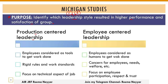The first style is Production-Centered Leadership — this is our task-oriented style. Here the leader's focus is only on work. Employees are considered as tools to get the work done, treated like machines. There are very rigid rules and work standards. The environment focuses only on work, not on the employee at all. It focuses on the technical aspects of the job.